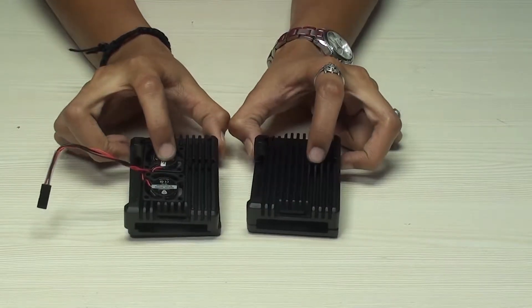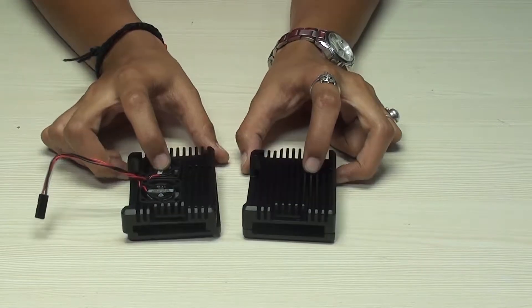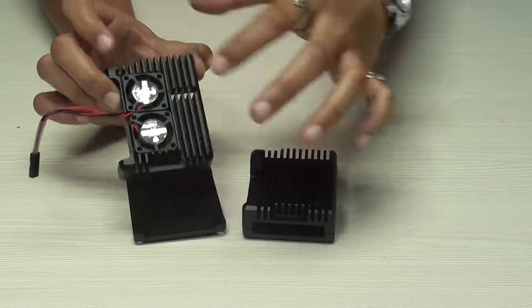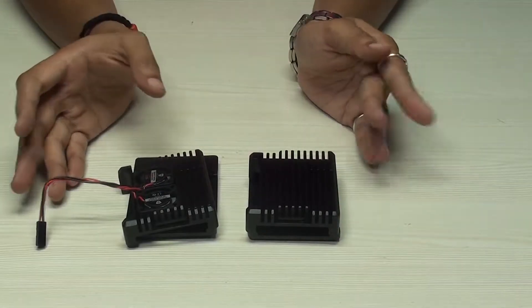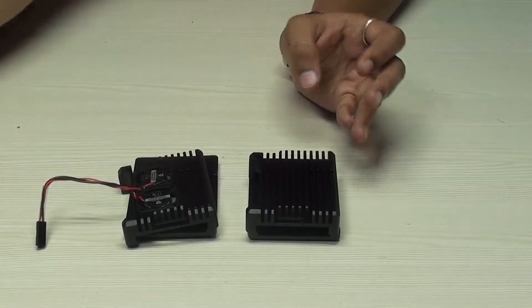Hello everyone, today we are here to show you the new aluminum alloy heatsink with double fan and the one without fan for Raspberry Pi 4. We'll talk about both heatsinks and we'll see how to install them to the Raspberry Pi.